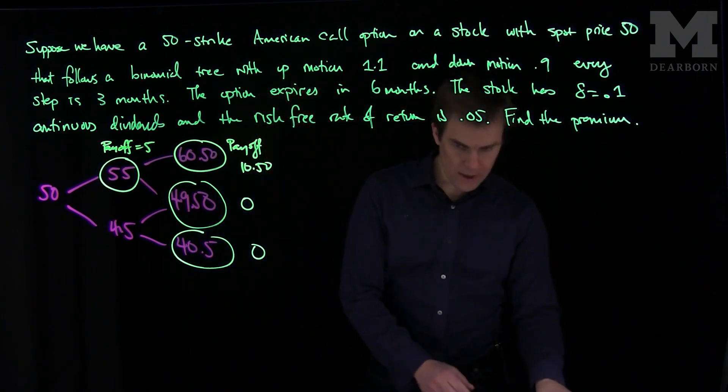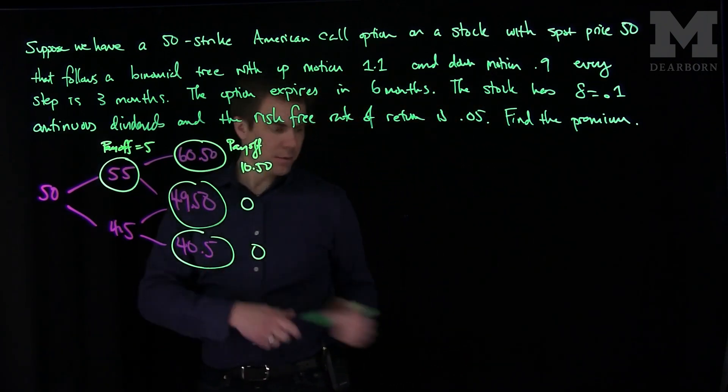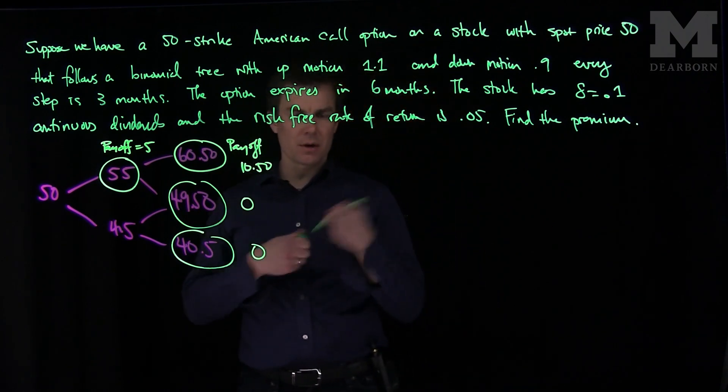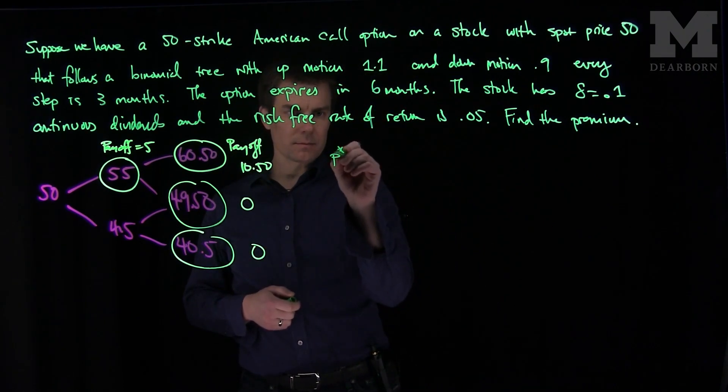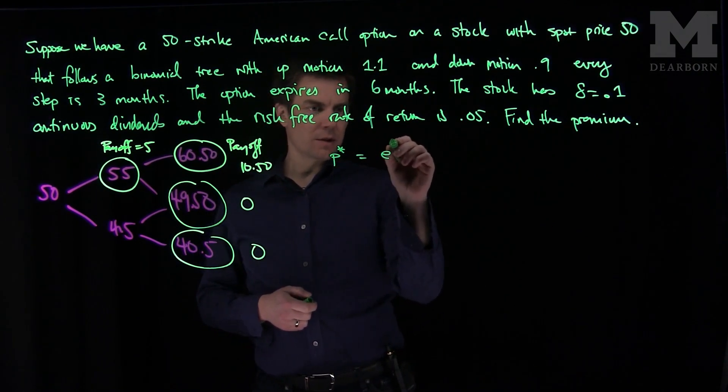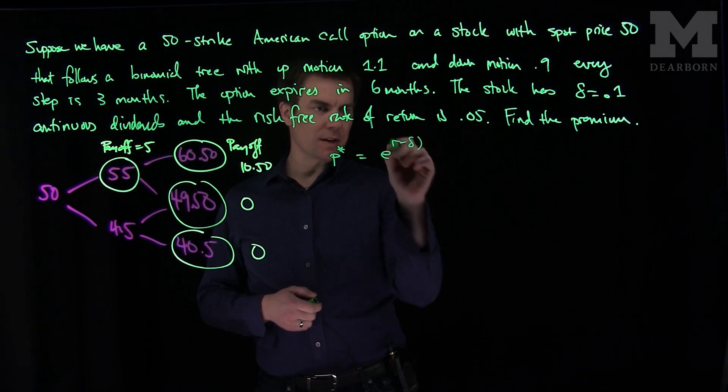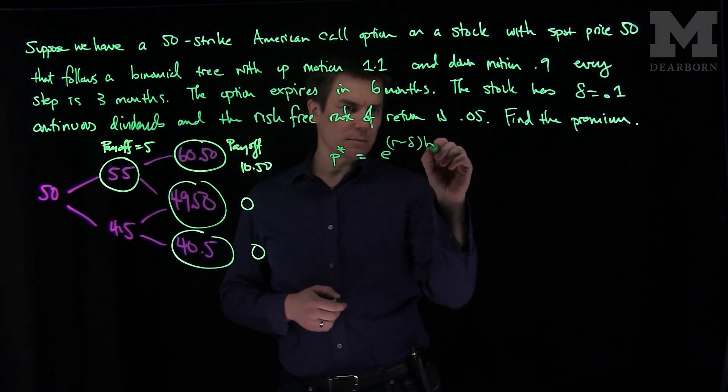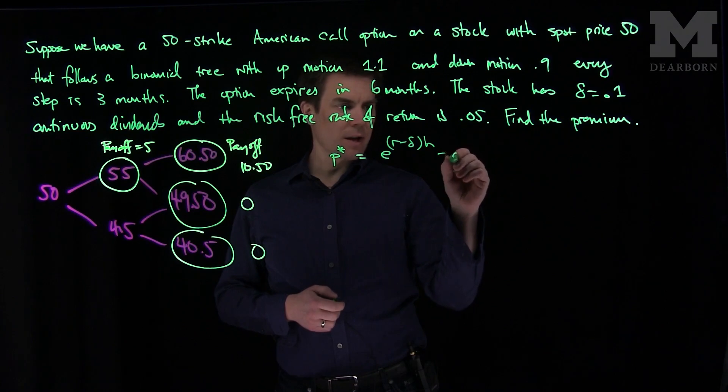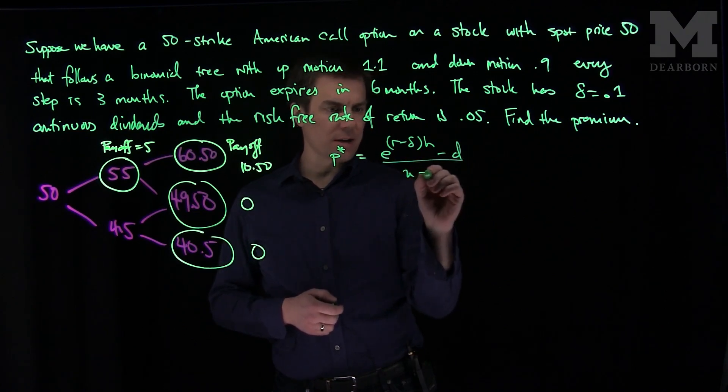Now we need to find the risk-neutral probability. So our P star is going to be e to the r minus delta h minus the down rate, over the up rate minus the down rate.